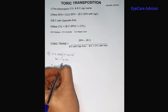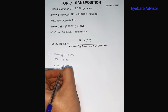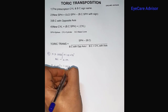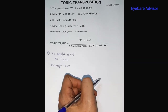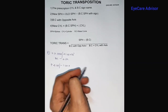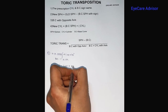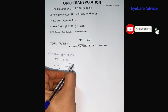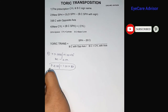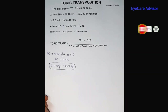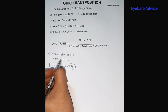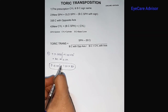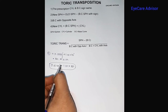After the simple transposition, the new sphere will be plus four (plus three plus one equals plus four), the cylindrical power remains minus one, and the axis changes from 90 to 180 degrees. So the transposed prescription is plus four, minus one at 180 degrees. Now you can see that the base curve cylindrical sign and this prescription sign are the same.